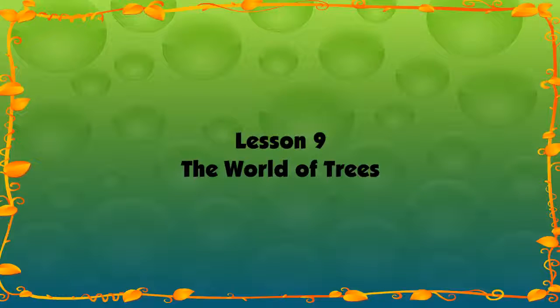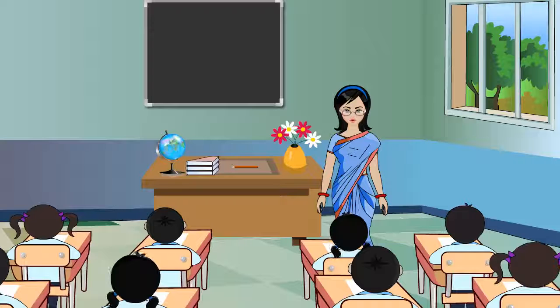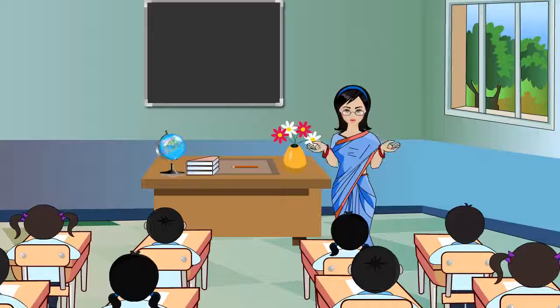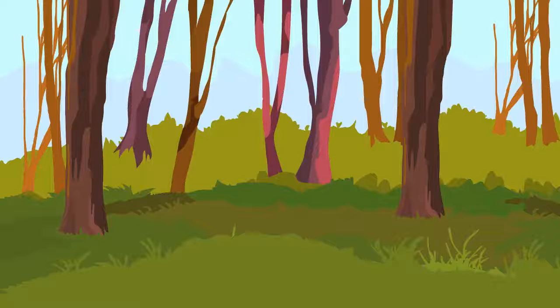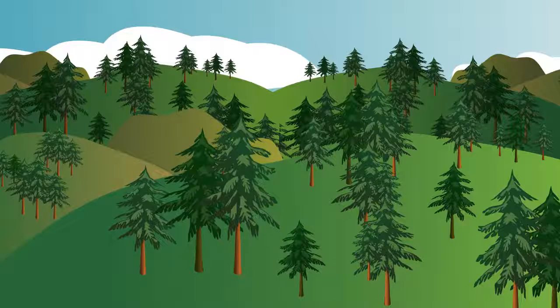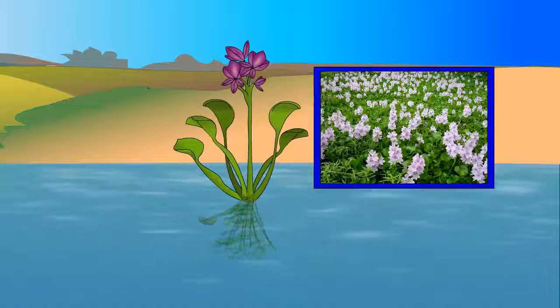Lesson 9: The World of Trees. There are thousands of various kinds of plants on earth. Plants grow everywhere — in forests, in mountains, and even in water.